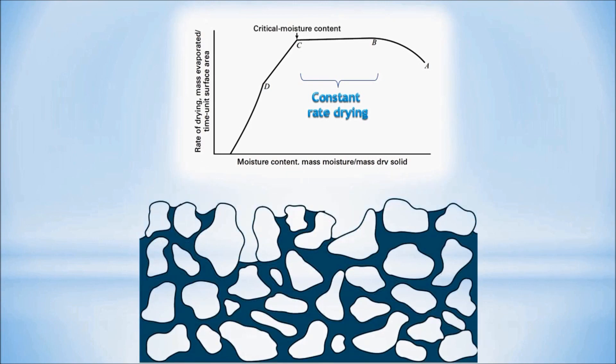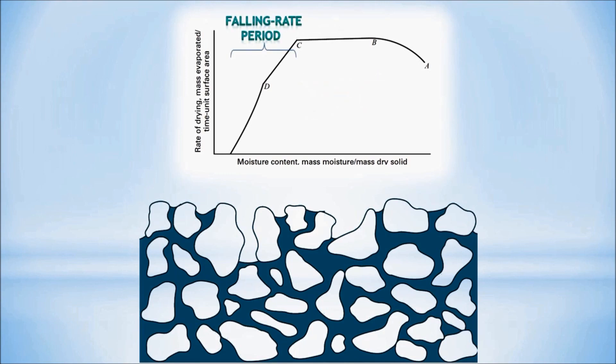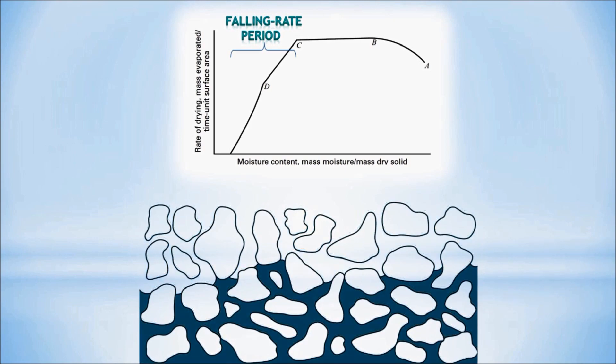At this point onwards, the moisture barely covers the exposed surface and the drying rate decreases. This period is called the falling rate period. The moisture will continue to evaporate until eventually the wet solid dries up. Thus, as you can compare based on the drying rate for all periods, constant rate drying is the best because you can evaporate a huge amount of moisture with a shorter period.